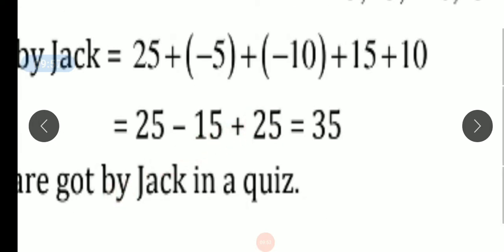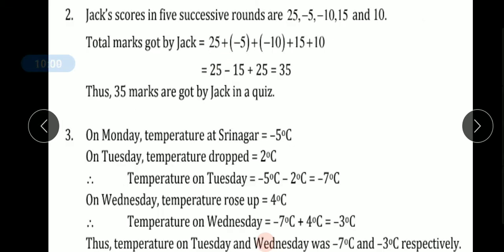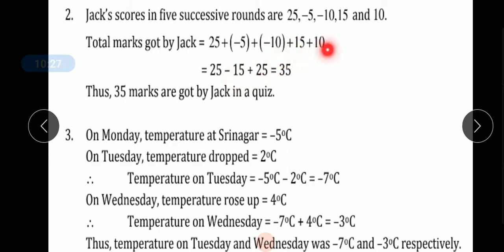Total marks got by Jack = 25 + (minus 5) + (minus 10) + 15 + 10. If a number is negative, write it in brackets. Adding the negative numbers: minus 5 and minus 10 = minus 15. Adding the positive numbers: 25 + 15 + 10 = 50. Then 50 minus 15 = 35. Thus, 35 marks are got by Jack in the quiz.